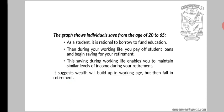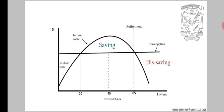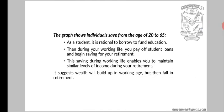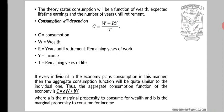It suggests that wealth will build up during the working age — from age 20 to 65 — but then it falls in retirement. During the working age we carry on the consumption curve; we do not consume all our income and we save, in order to maintain the same consumption pattern after retirement.